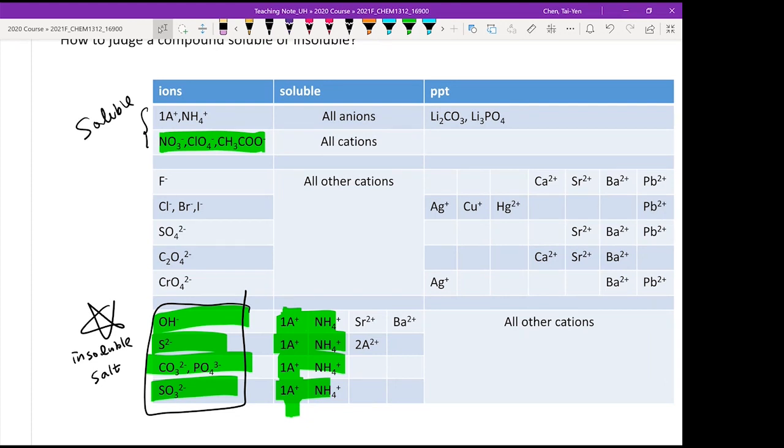SO4 2- minus, C2O4 2- minus, and CrO4 2- minus. If you can memorize it, if you cannot, if you are not chemistry major, just there you go.